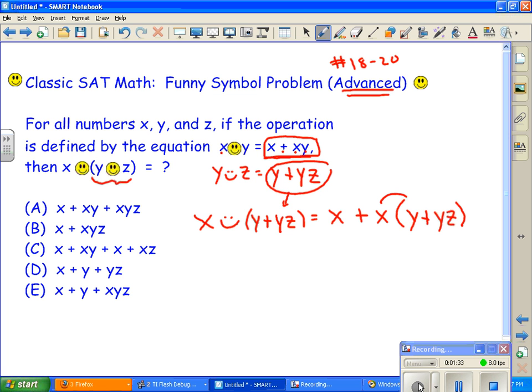Now we have to distribute here using distributive property. x times y is going to be xy, plus x times yz is going to be xyz. And we already had an x here.